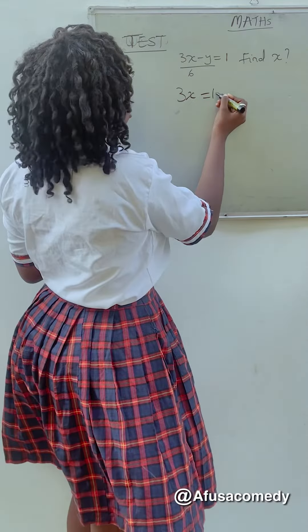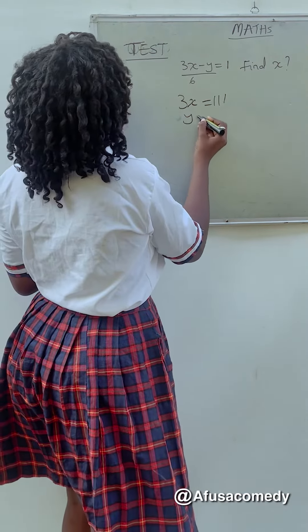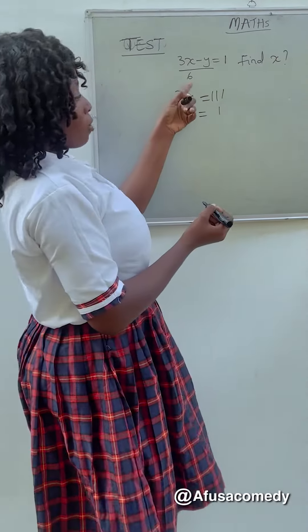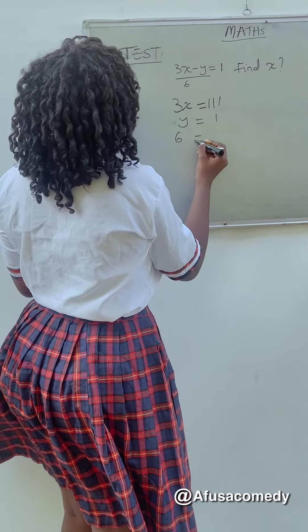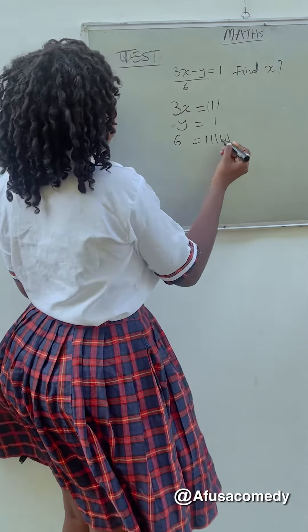You didn't want to use, so we should pay attention. So first of all, we'll remove this. Our 3x, which is 3x, is equal to 1, 2, 3. So they will now take this our y, y is equal to 1. They will now take this our 6, 6 is equal to 1, 2, 3, 4, 5, 6.